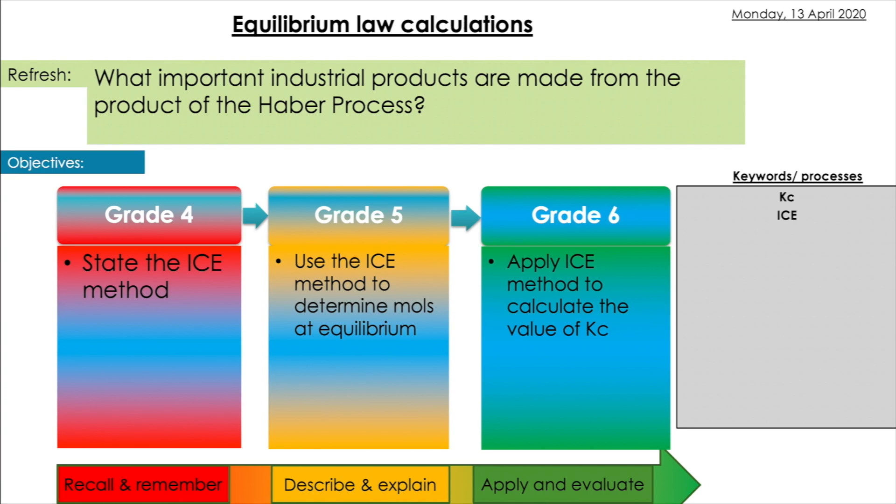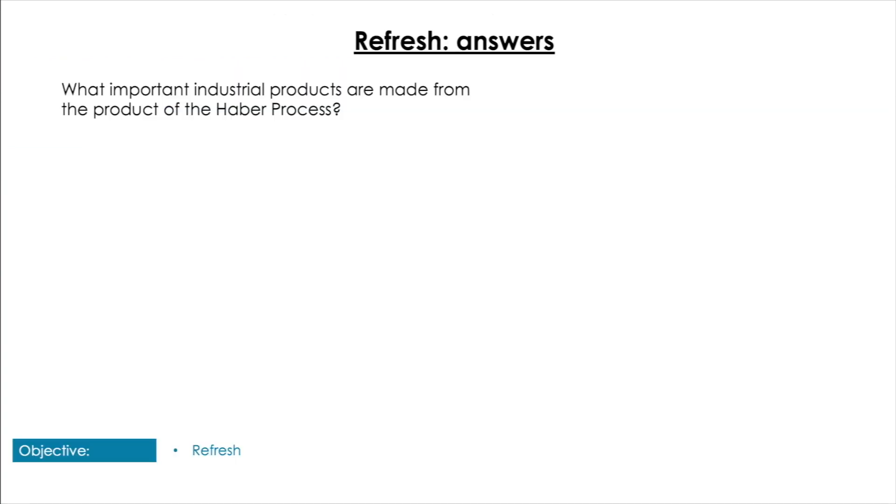First things first, as usual there is a refresh question. What important industrial product is made from the Haber process? That's right, it's ammonia, and that was the main reaction we were looking at in the last video.